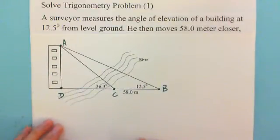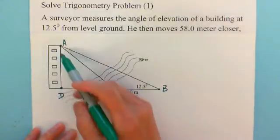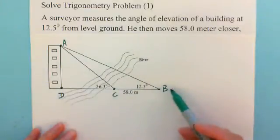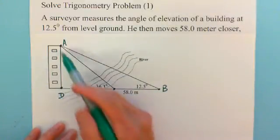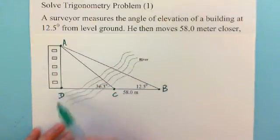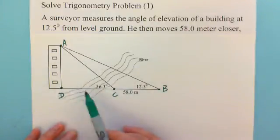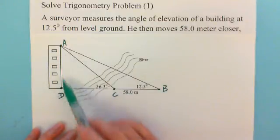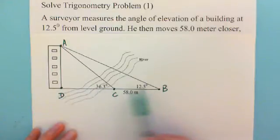In solving trigonometry problem 1, I showed you working with triangles ABD and ACD using right triangles, where the same side is opposite these two angles, setting up tangent.